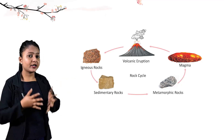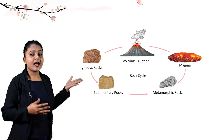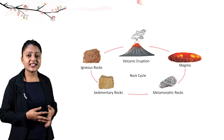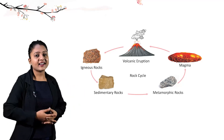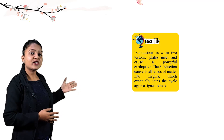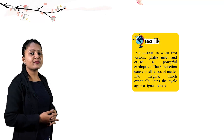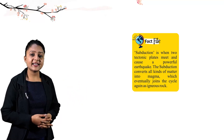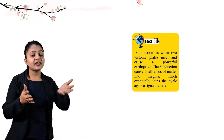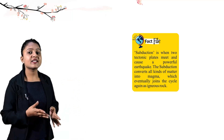Igneous rocks are the primary rocks. From these, sedimentary rocks form when weathering acts on them. Under high pressure and temperature, sedimentary rocks become metamorphic rocks. Metamorphic rocks then change back into magma through volcanic eruption. Fact file: subduction is when two tectonic plates meet and cause a powerful earthquake. The subduction converts all kinds of matter into magma, which eventually joins the cycle again as igneous rocks.